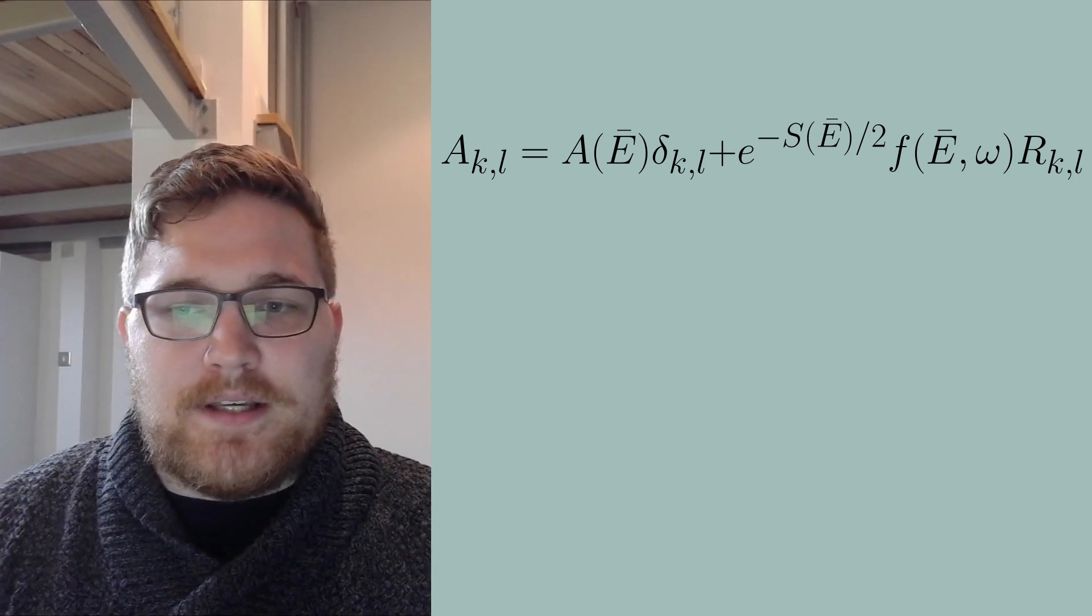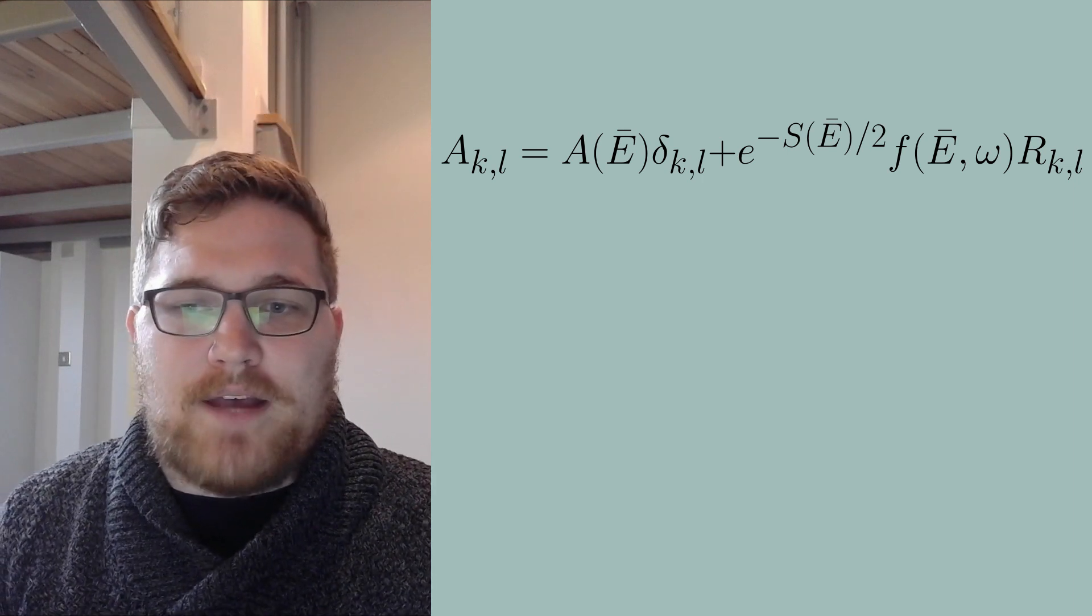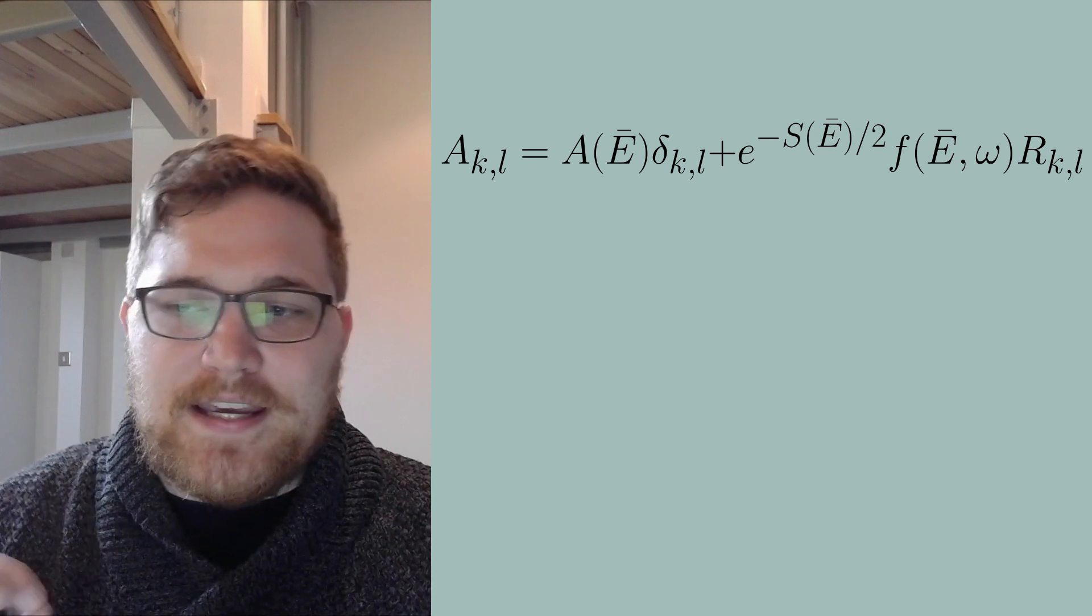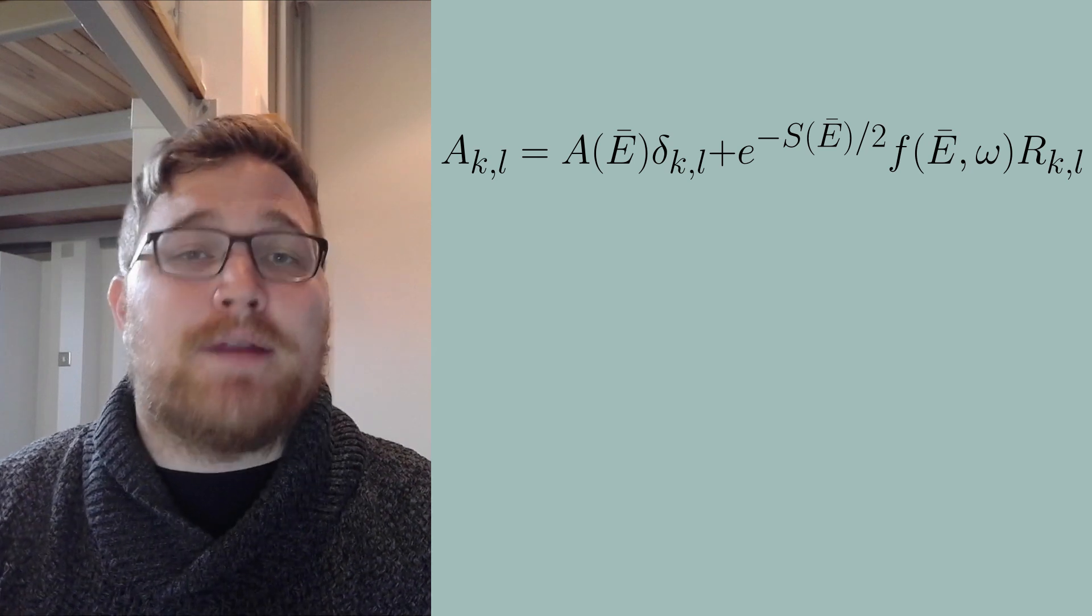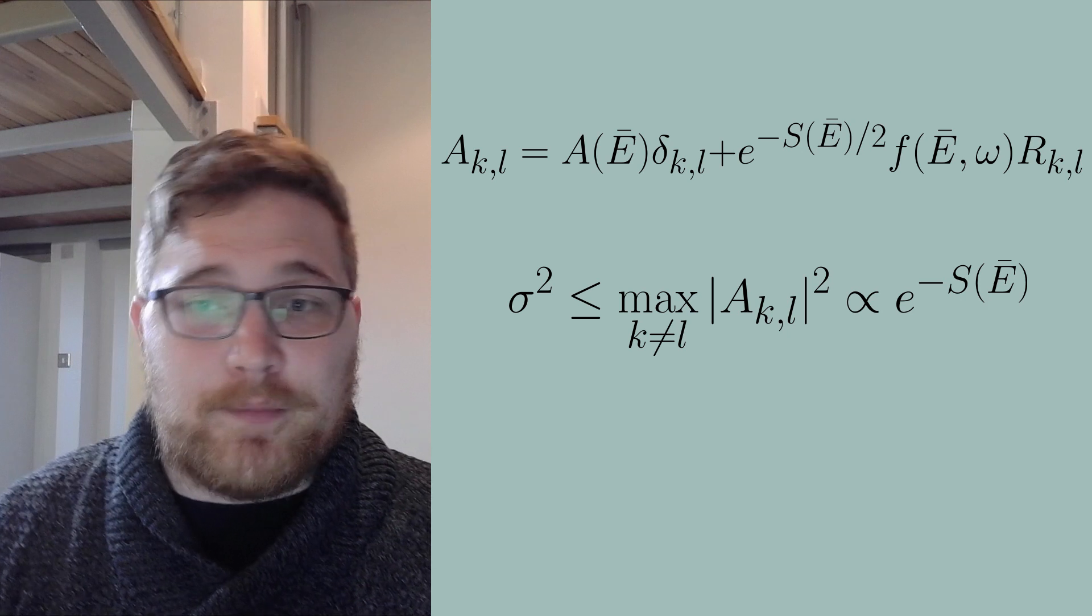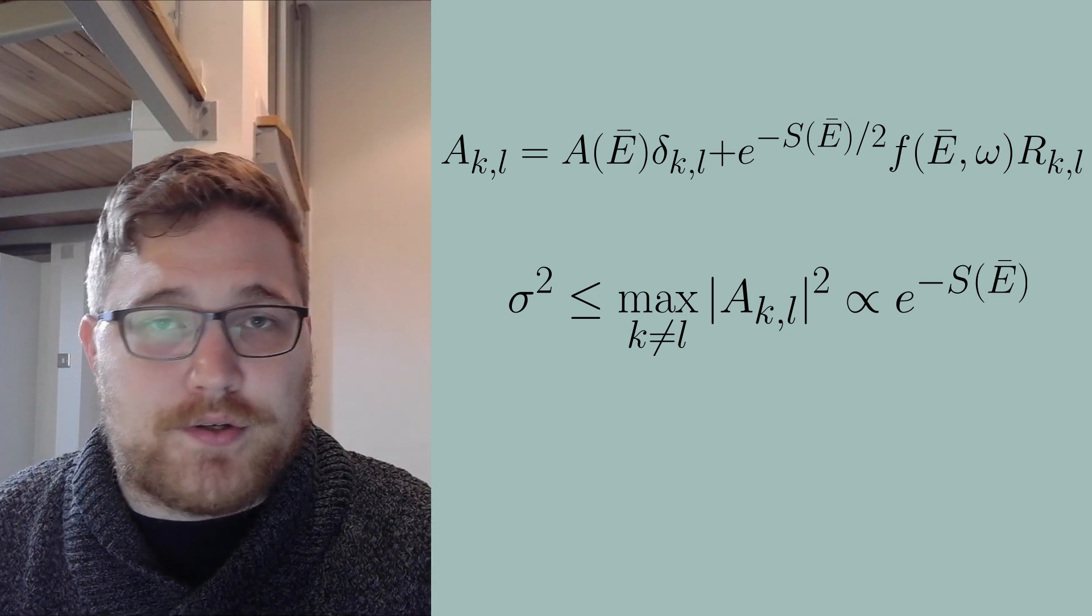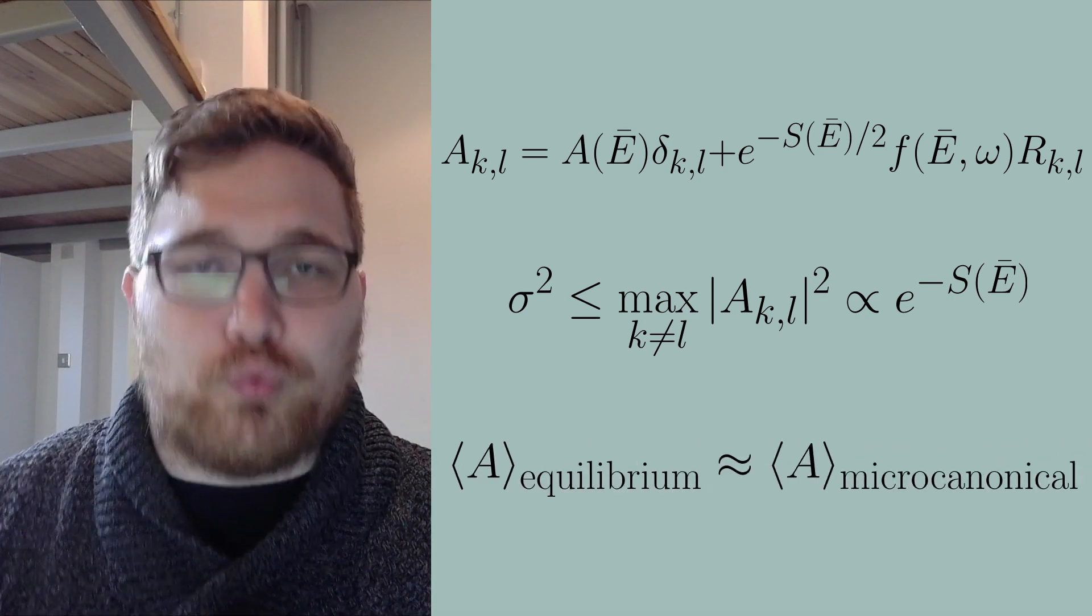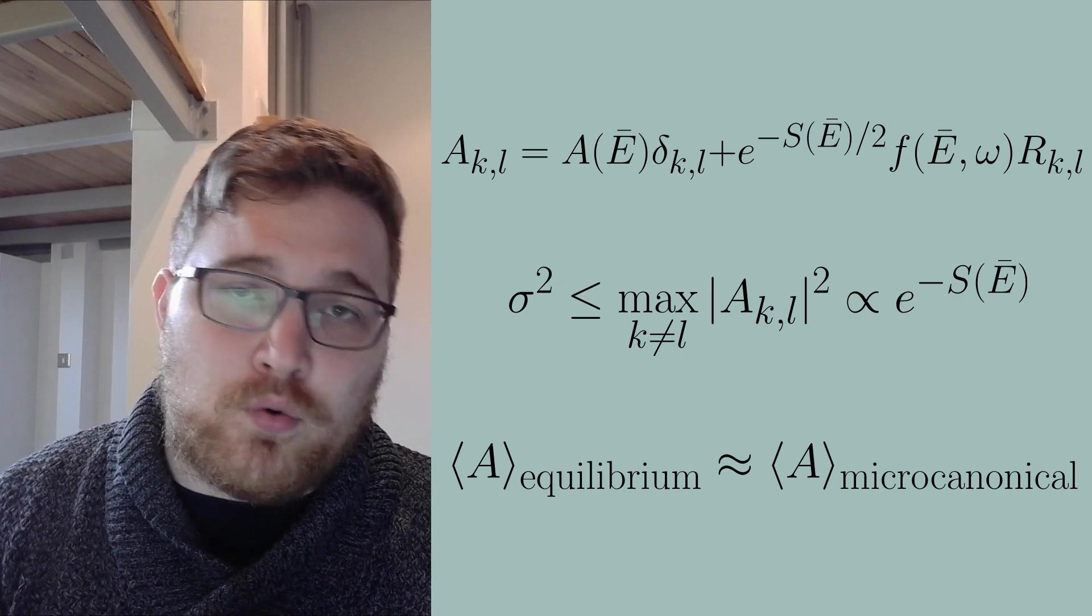Basically, what we get is that assuming we start our dynamical system in some pure state, which has support on a continuous but small window of energy, then the ETH tells you that the fluctuations around equilibrium are exponentially suppressed by the thermodynamic entropy. So let's call those fluctuations sigma squared. Then we get the following formula for how the fluctuations are suppressed. It also tells us that the equilibrium value of our observable will agree with statistical mechanics or in particular with the microcanonical average.